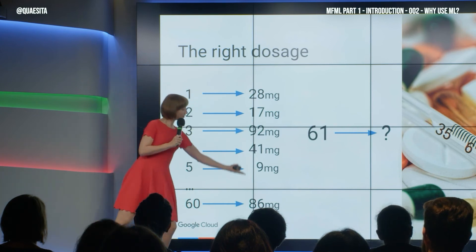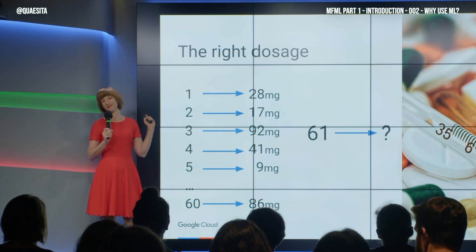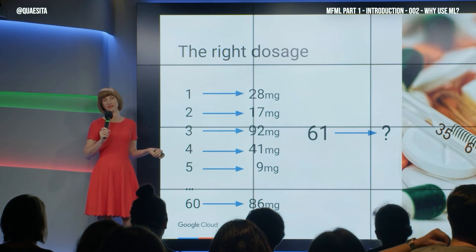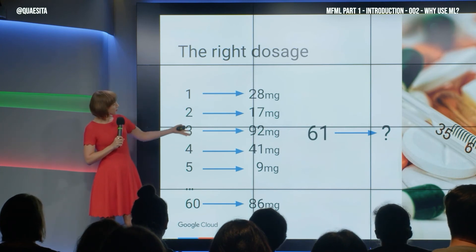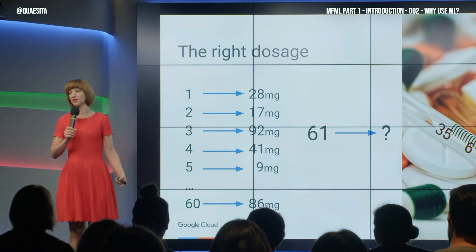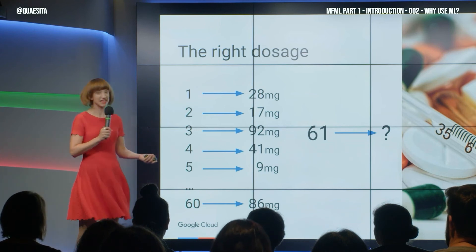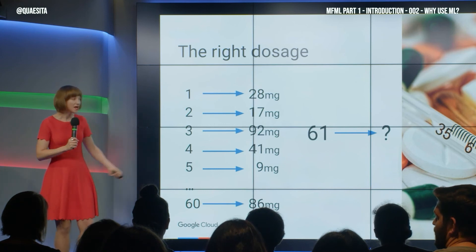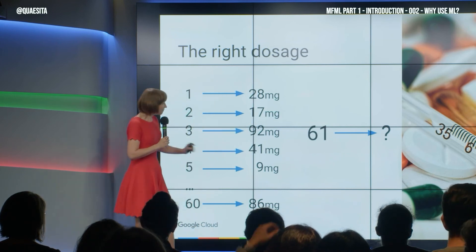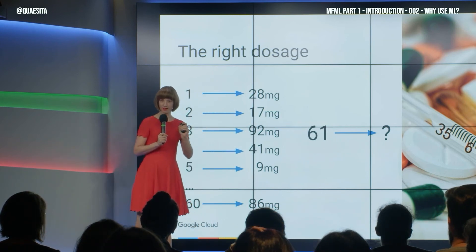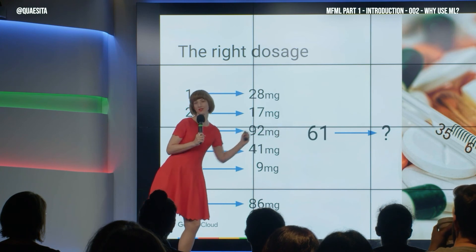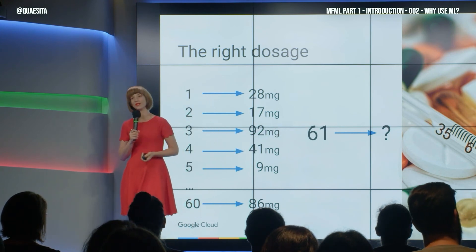Well, if there are no patterns here in these data, then you can't actually solve that. Nothing can help you for day 61. Or if there are patterns, but they simply don't apply past day 60 — they don't generalize beyond that, because maybe the patient is now healthy or dead — then it doesn't work either. The only way you might be able to make an attempt at day 61 is if there are patterns here that you can find, make a recipe out of, and that are still relevant and useful in this new data situation. In that case, you would want to use machine learning.